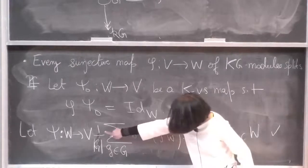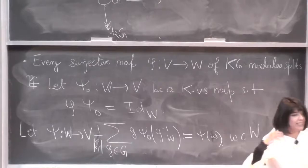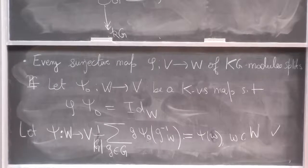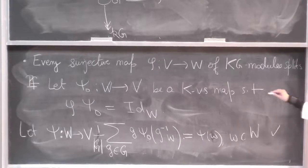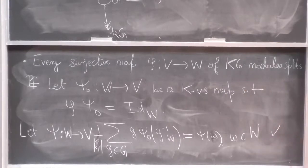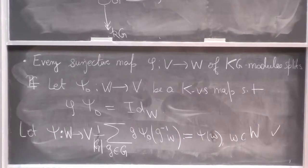This shows you why the averaging argument works over capital K but won't necessarily work over fields of positive characteristic — because you can't put the denominator |G| there. In some sense, a lot of modular representation theory is trying to deal with the fact that you cannot invert |G|, and we try to do it in many different ways. If you think of KG as a finite-dimensional algebra, every module is projective, so KG is a product of simple algebras.